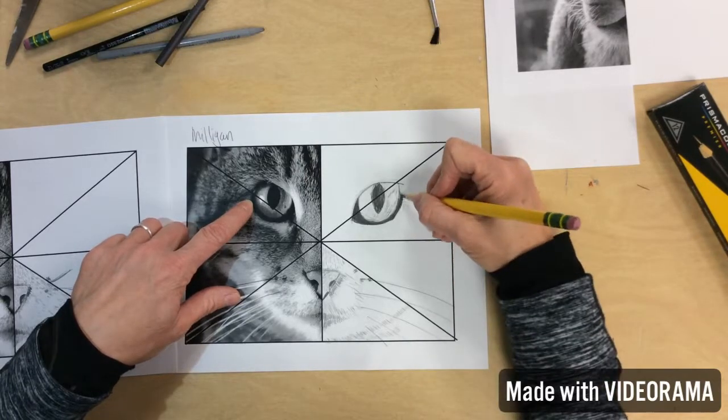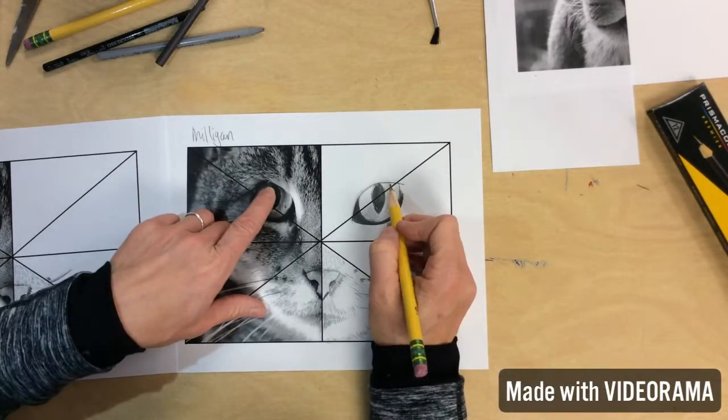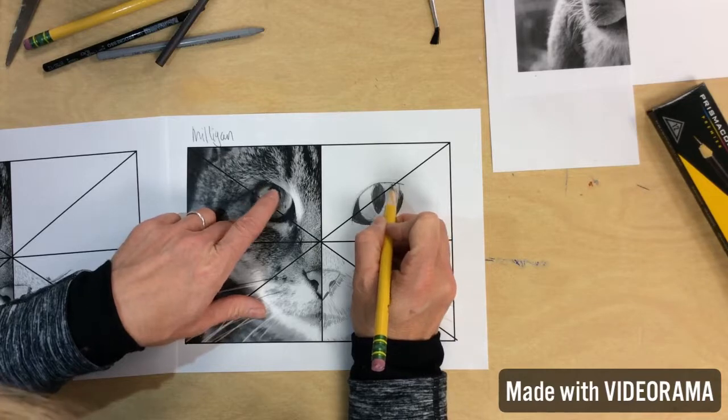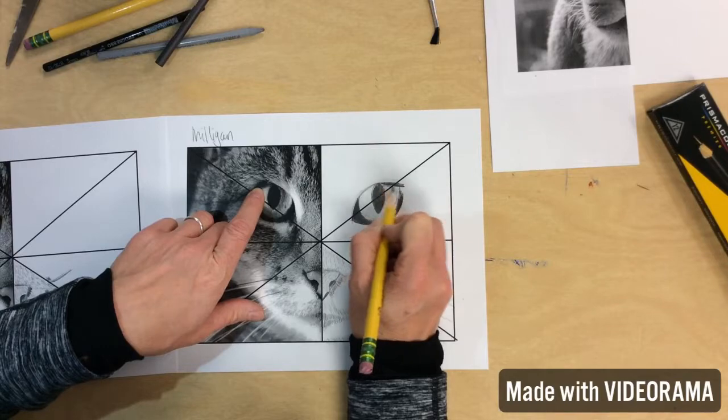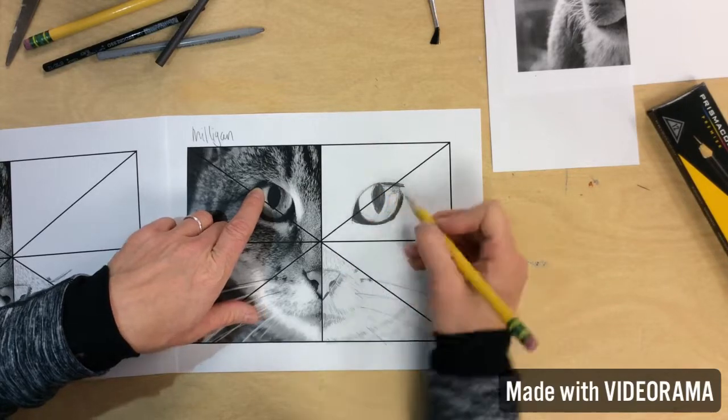And up here, up above this here, it is really dark towards the outside. It's the same thing. And then it gets gradually lighter.